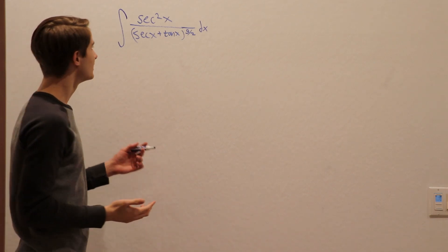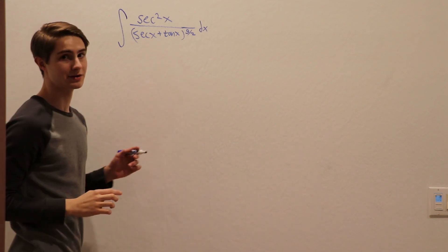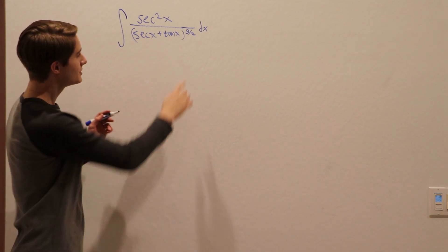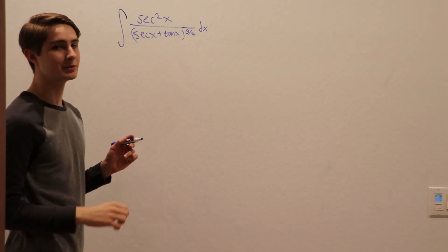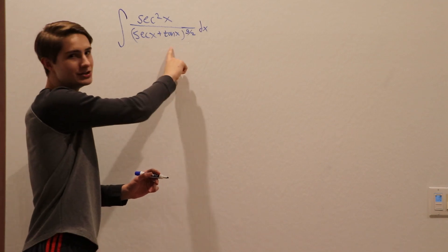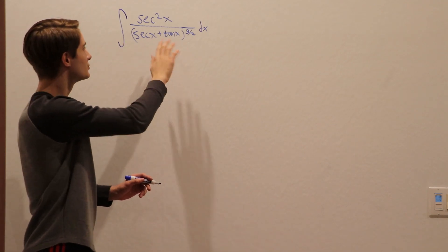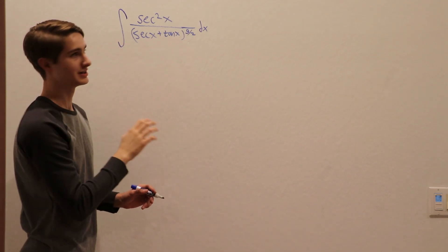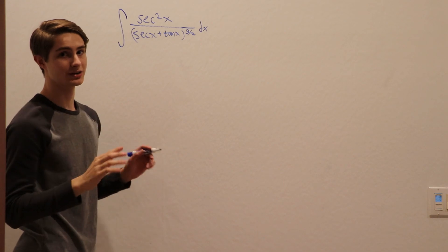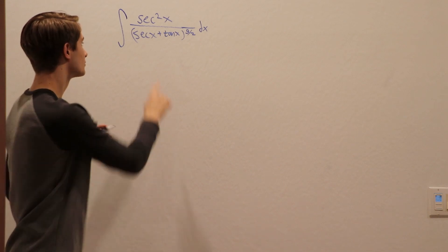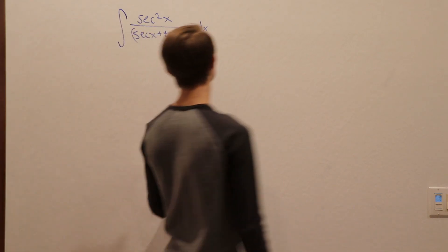The way we're going to approach this is to start by looking at the bottom. When you see something to the 9 halves power, that's telling you you're not going to do anything to the bottom to make it look nice. The 9 halves power is not going to go away, so you're going to have to substitute the inside.